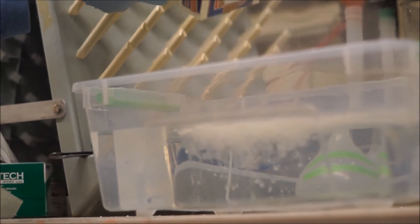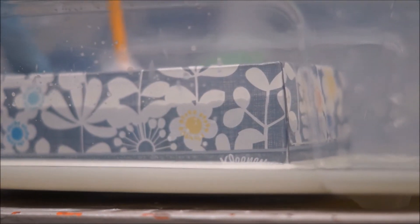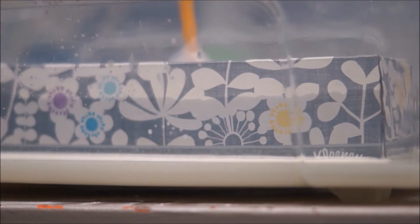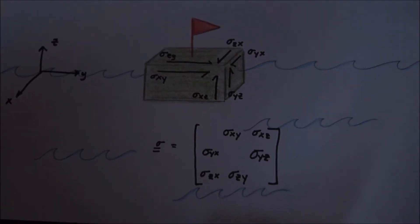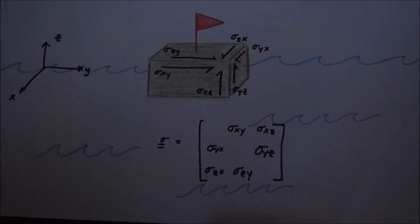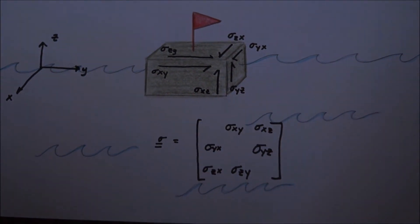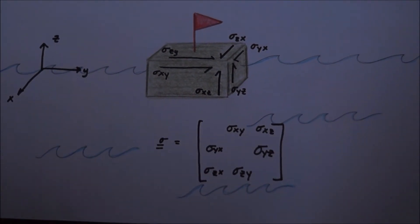And as we can see from our cornstarch and water experiment, by increasing the viscosity, it also increases the amount of resistance. Back to our stress tensor diagram, in the matrix, the non-diagonals are the ones that are affected by viscosity.